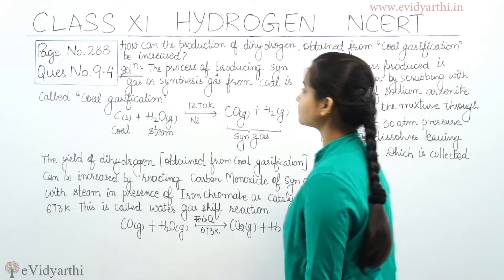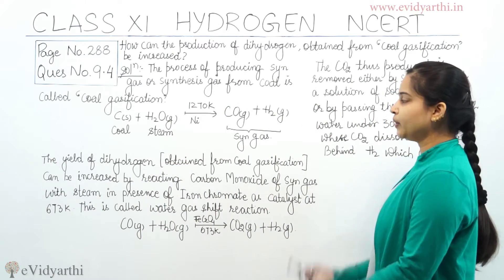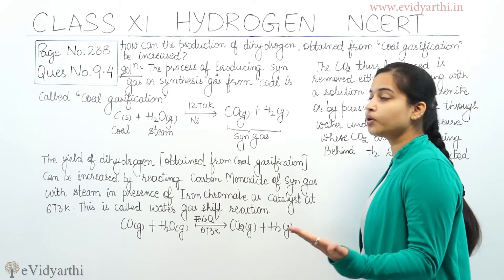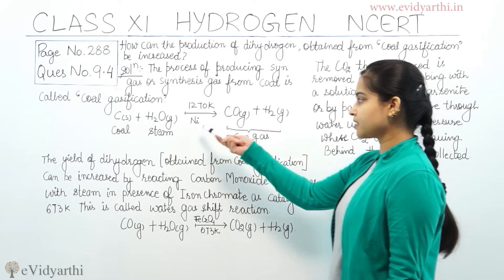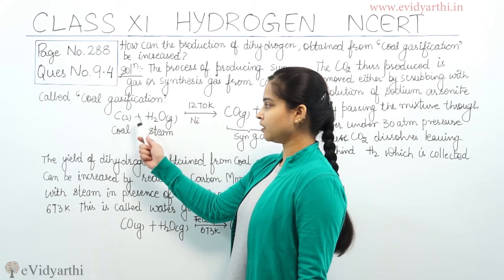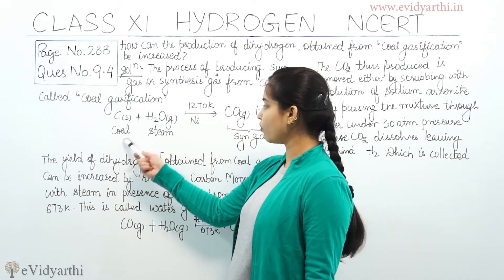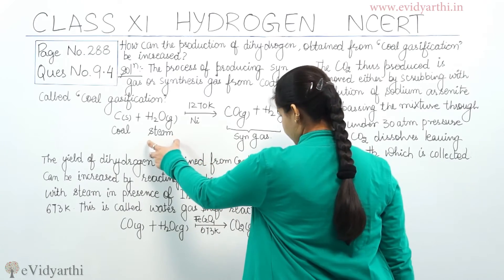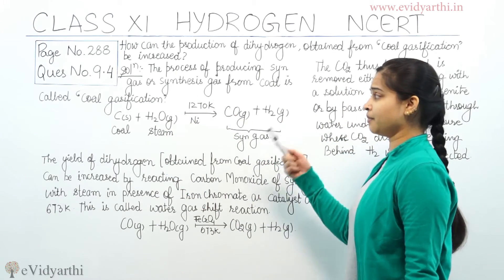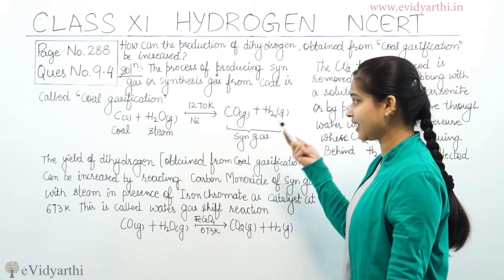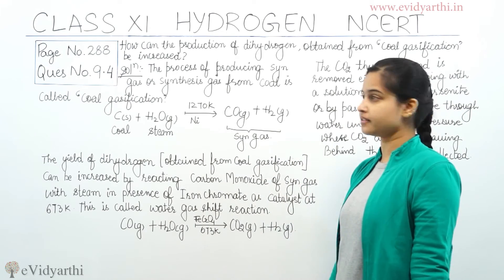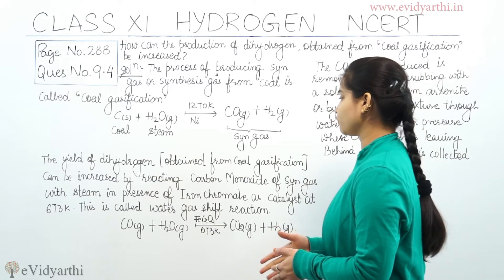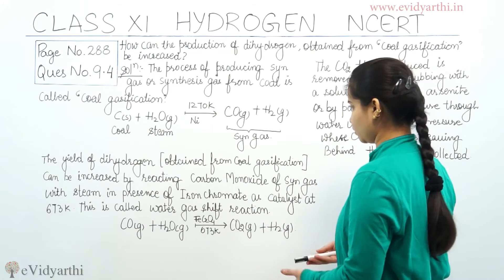Now please have a look at the board. The process of producing syngas or synthesis gas from coal is called coal gasification. The reaction is: C(s) [coal] + H₂O(g) [steam], heated to about 1270 Kelvin in the presence of catalyst nickel, gives CO(g) + H₂(g). This mixture is called syngas or synthesis gas.